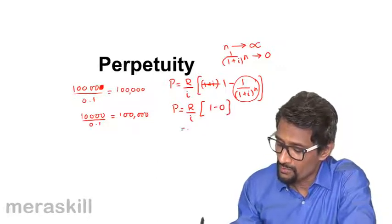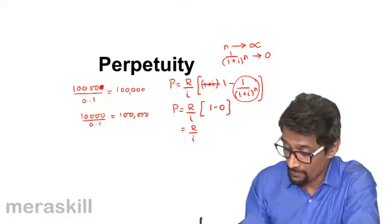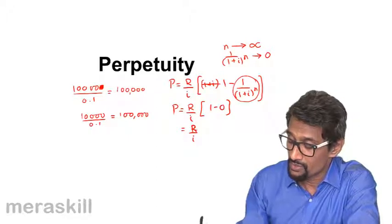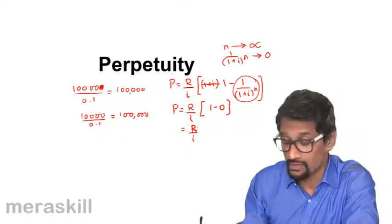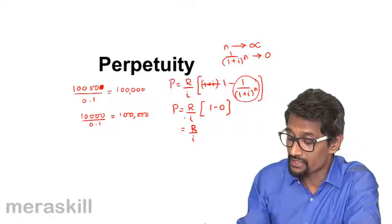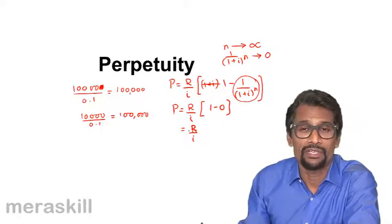you deposit, the present value is going to be just the installment divided by I. Hence we get the value of a perpetuity, or the value that allows you to get a fixed amount every year for a long period—till the end—you keep getting the fixed amount.